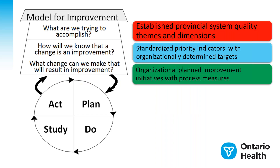Here is how the model for improvement maps to the quality improvement plan. There is a perfect matchup between the three fundamental questions of the model for improvement and the elements of the QIP. What are we trying to accomplish? The focus of the first video is reflected in the QIP as established provincial system quality themes and dimensions. How will we know that change is an improvement? That is what we talk about today: standardized priority indicators with organizationally determined targets. And what change can we make that will result in improvement? Organizationally planned improvement initiatives with process measures — the focus of the third video.